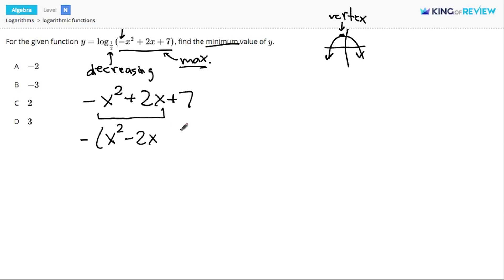And I'm going to leave a space inside those parentheses, because the key part of completing the square is taking the coefficient of x, negative 2, dividing it by 2, and squaring it. Negative 2 divided by 2 is negative 1, and negative 1 squared is 1. So I'm going to add 1 inside the parentheses.